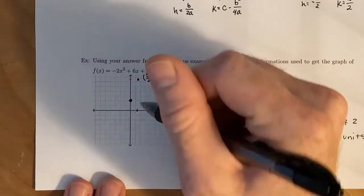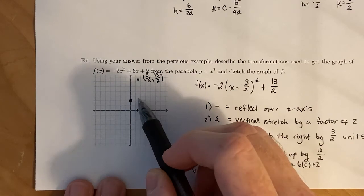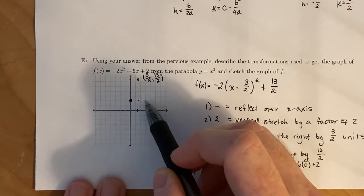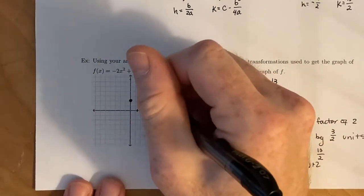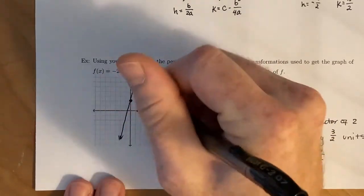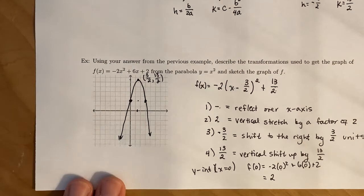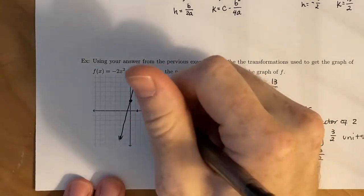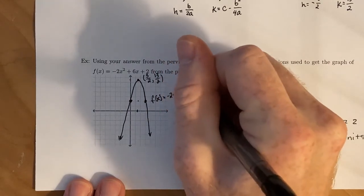Since this thing is highly symmetric, if we go 1.5 over, we're underneath the vertex. If we go 1.5 over again, we would have that other point. So once we have those three points, we can go ahead and sketch this thing. And that is our graph for this quadratic function, f(x) = -2x² + 6x + 2.